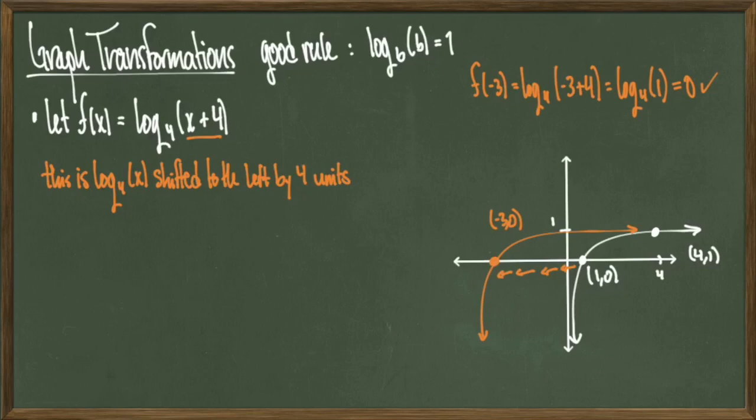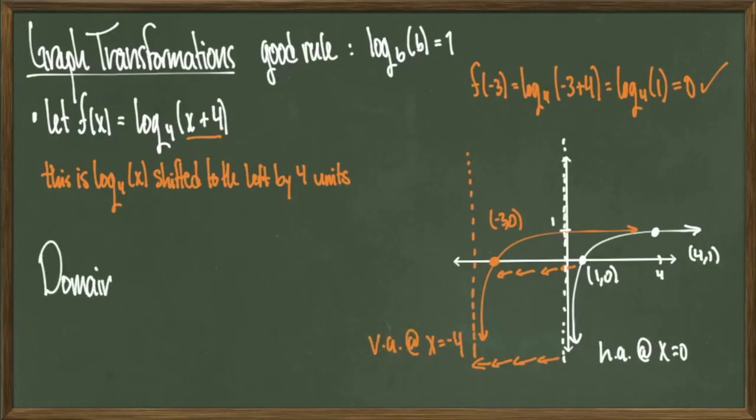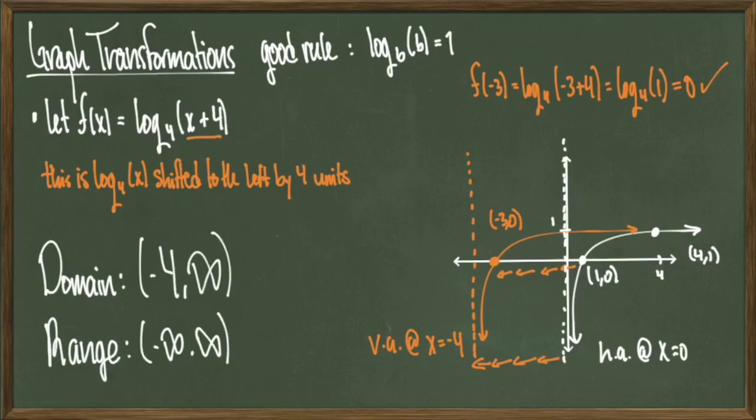So this is pretty good for a sketch, but the only other piece of information I should input is the vertical asymptote. The first graph that I drew originally had a vertical asymptote of x = 0, in other words the y-axis. But since I had a leftward shift of 4 units, that vertical asymptote got shifted to the left by 4 units as well. Therefore in my graph transformation, I have a vertical asymptote of x = -4. Now I can read off my domain and range. The domain is (-4, ∞) because I've pushed the graph 4 units to the left, and my range is all real numbers.